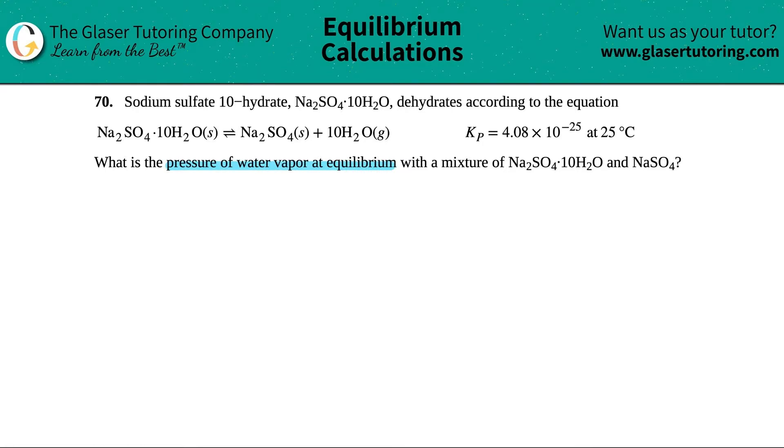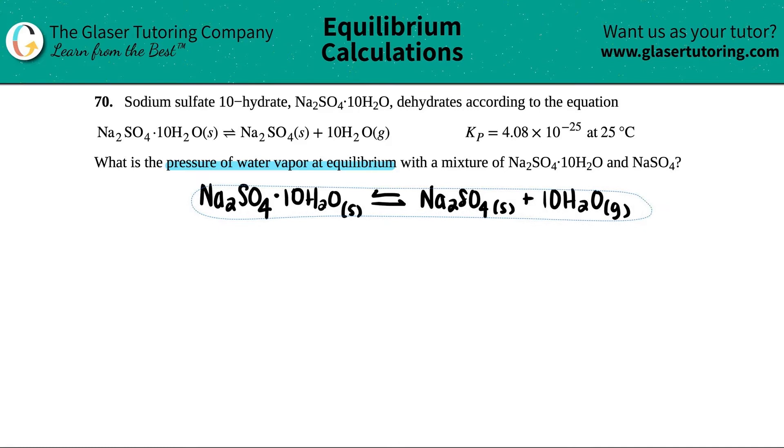They gave me an equation, so I'm going to rewrite this bigger so we have room to work with it. We have Na2SO4·10H2O (that's a solid, deca means 10 hydrates), and this comes to equilibrium with Na2SO4 (also a solid) plus 10H2O. And that's a gas.